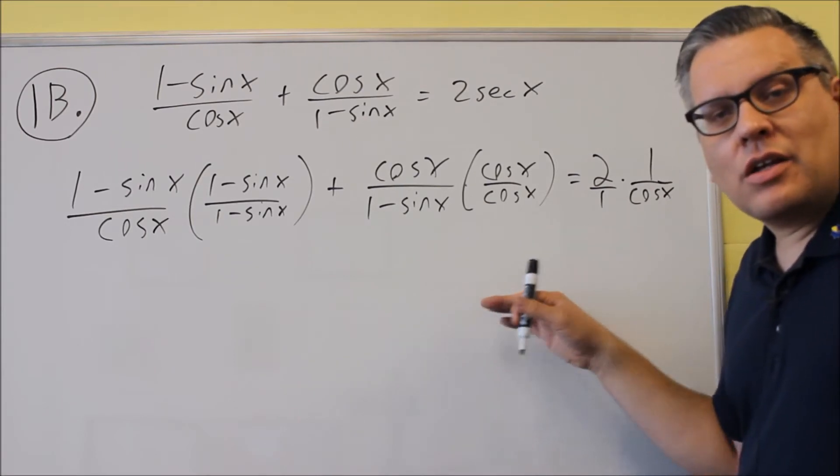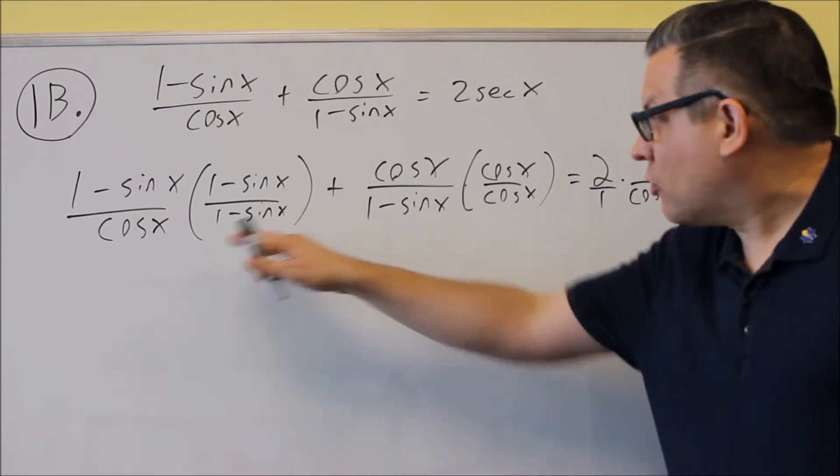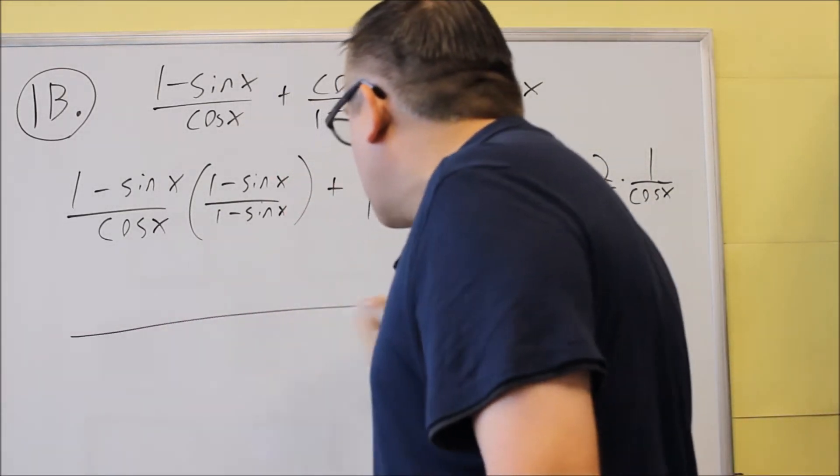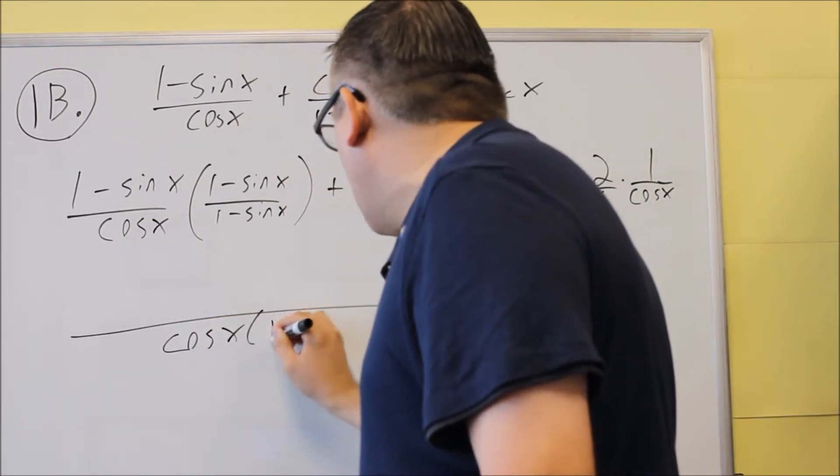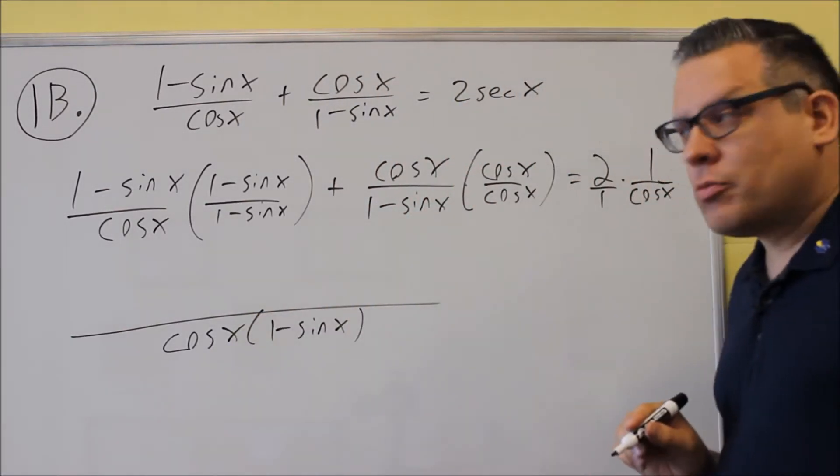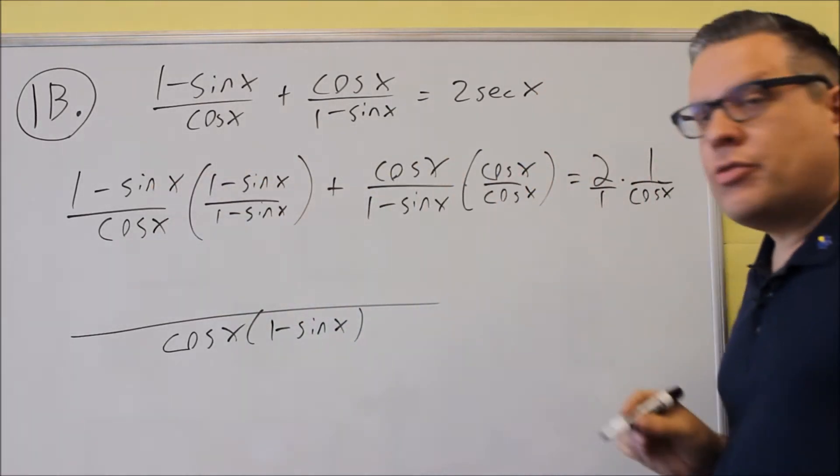Next thing we want to do is get a common denominator, so we're going to write all this over a single denominator, which in this problem is going to be cosine x times 1 minus sine x, so it's 2 multiplied together. We'll leave it in the factored form. We'll multiply out through the top.